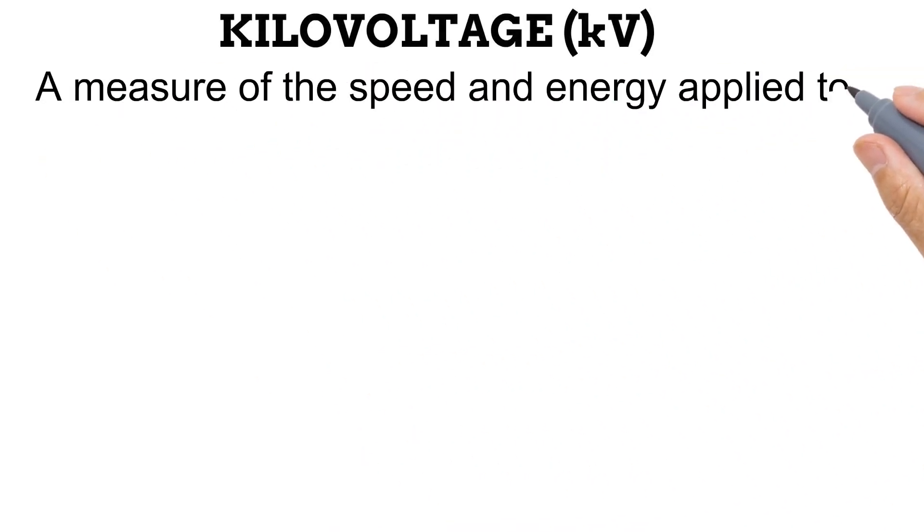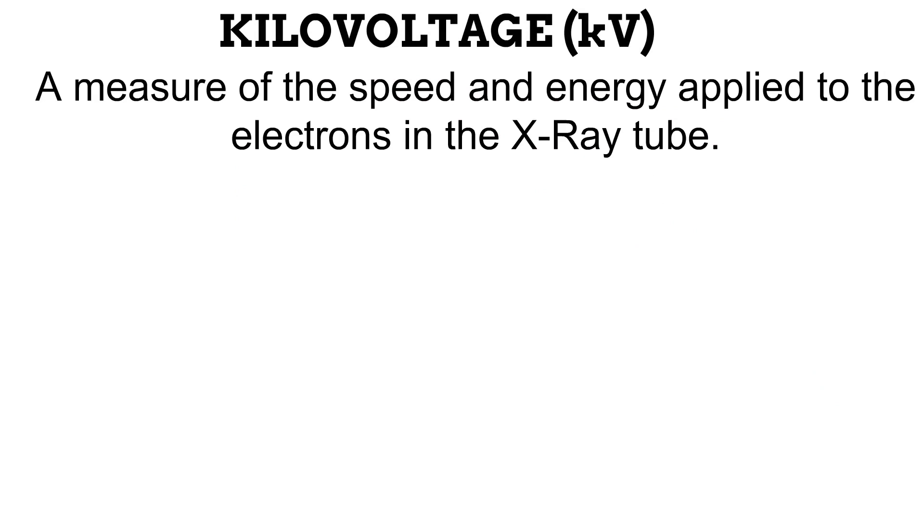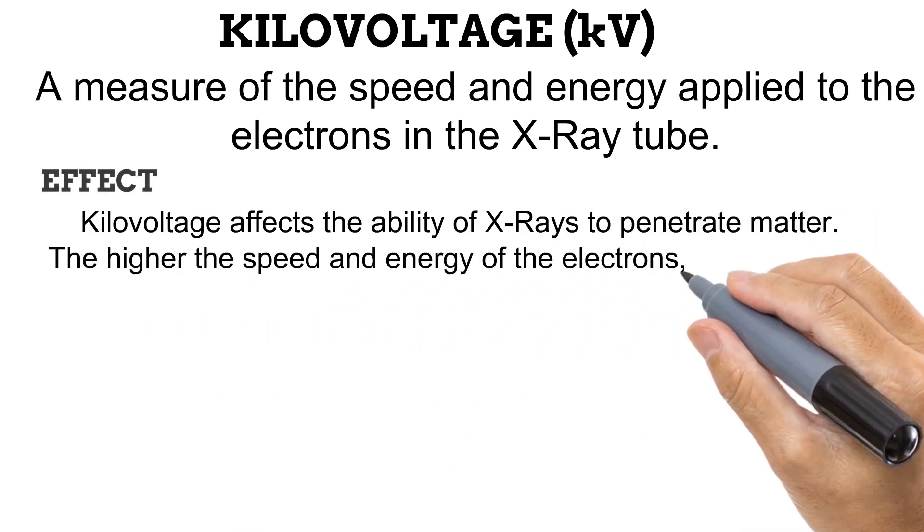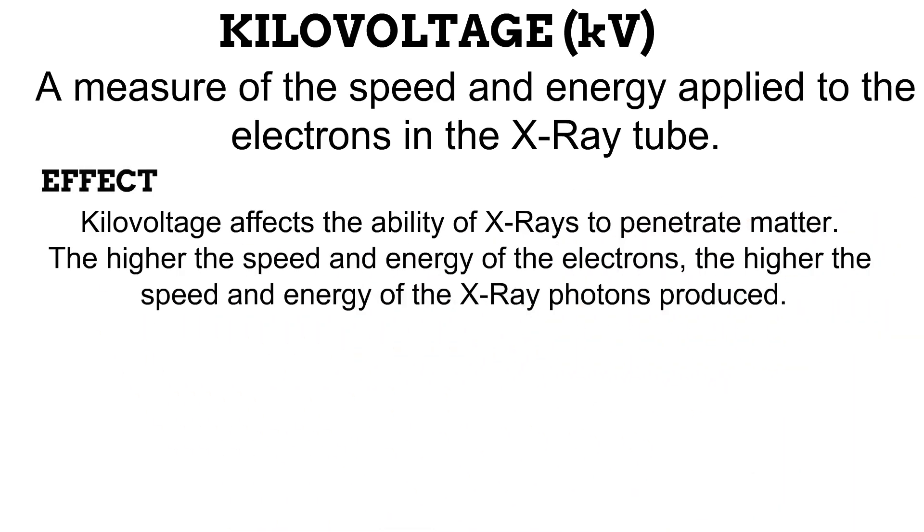Next, the kilovoltage. It is a measure of the speed and energy applied to the electrons in an X-ray tube. What effect does this have on a radiographic image? As electrons move from cathode to anode for X-ray photon production, the higher the speed and energy they possess, the higher the energy possessed by the X-ray photons they produce. This means that the kilovoltage determines the energy of X-ray photons, their ability to penetrate matter. In the next two videos, we learn how this affects the radiographic contrast and density.